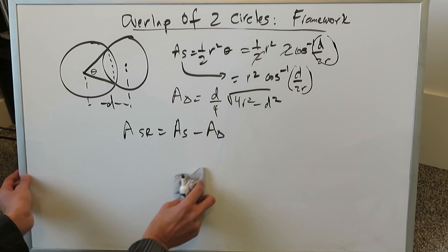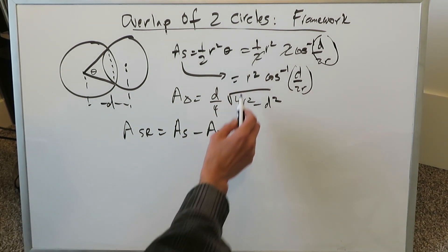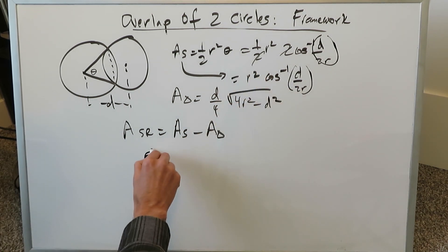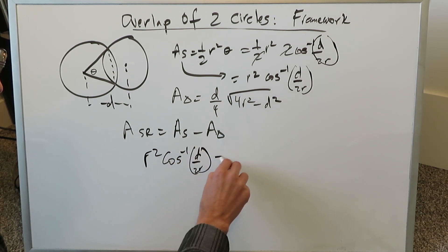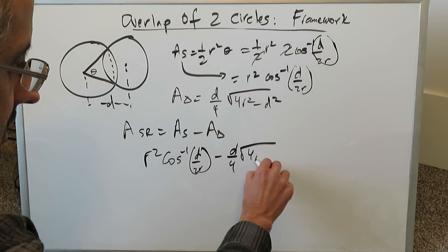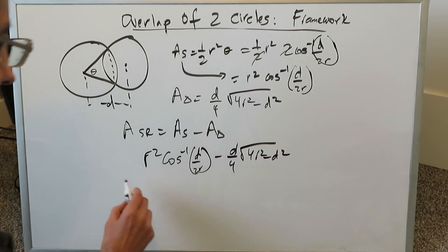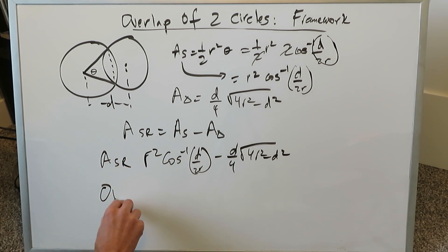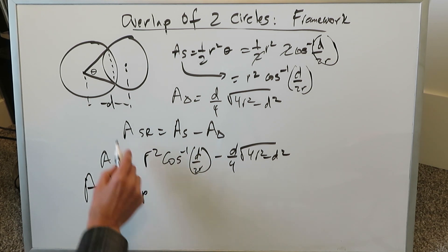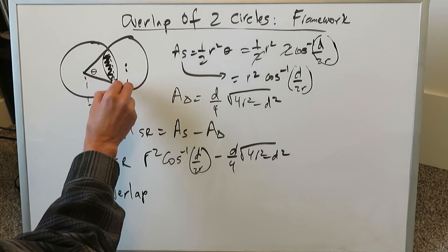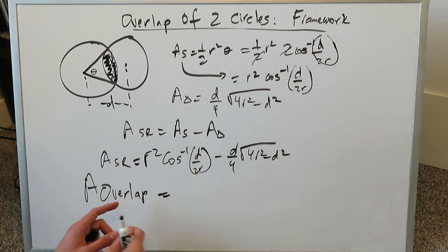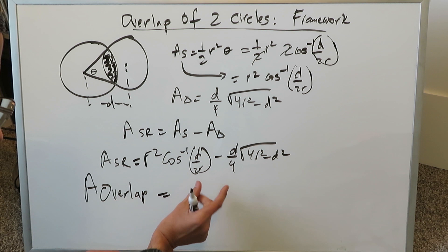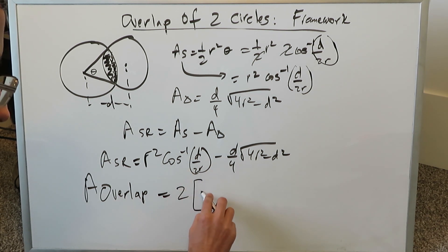Area of the sector is r² times inverse cosine of d over 2r. Area of the triangle is (d/4) times the square root of 4r² minus d². This represents the area of a single shaded region. Since the overlap is based on two shaded regions, two shaded regions give one full overlap. Therefore, the area of the overlap is the difference of those two values, multiplied by two.